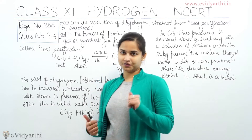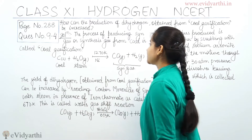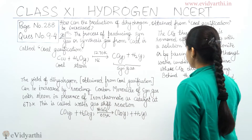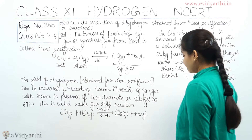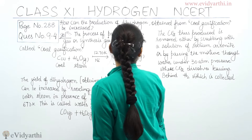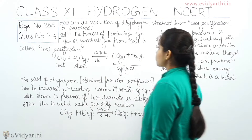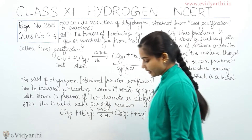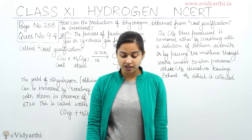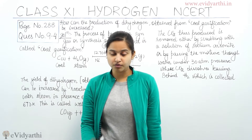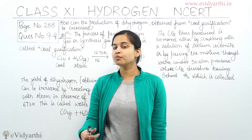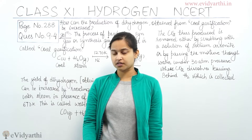So let's move on to the question first. The question is: how can the production of dihydrogen obtained from coal gasification be increased? So the question asks how we can increase the production of dihydrogen which is obtained from coal gasification.